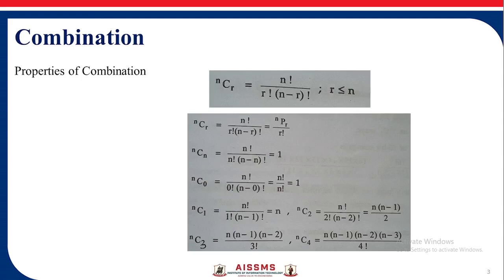Properties of combination. First, nCr is equal to n factorial upon r factorial n minus r factorial where n is greater than or equal to r. Now nCn equals 1. nC0 equals 1. nC1 equals n. nC2 equals n into n minus 1 by 2, and so on.